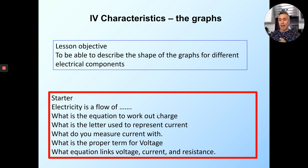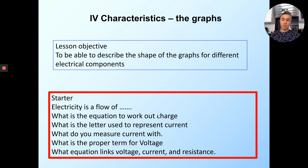First one: electricity is a flow of — what is it a flow of? What is the equation to work out charge? What is the letter you use to represent charge? What do you measure current with? What is the proper term for voltage, and what equation links voltage, current, and resistance?